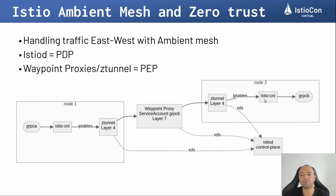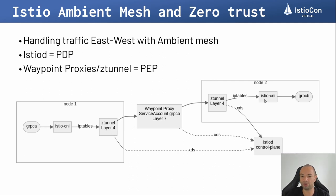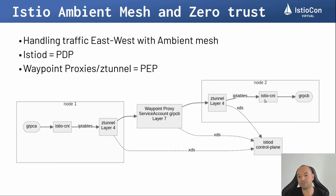The ztunnel is a DaemonSet and the waypoint is a Deployment that doesn't necessarily run on each node in the cluster. In this diagram, we also have another DaemonSet called Istio CNI that sets up iptables rules and enforces all your workload traffic through the ztunnel. The ztunnel detects whether the other workload inside the mesh has a waypoint or not, and forwards traffic to the waypoint if it exists. The waypoint can be created per service account or for an entire namespace, decreasing the overhead that the sidecar had in the traditional model.